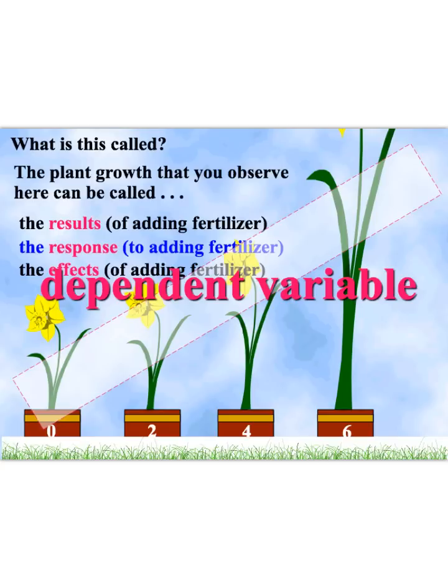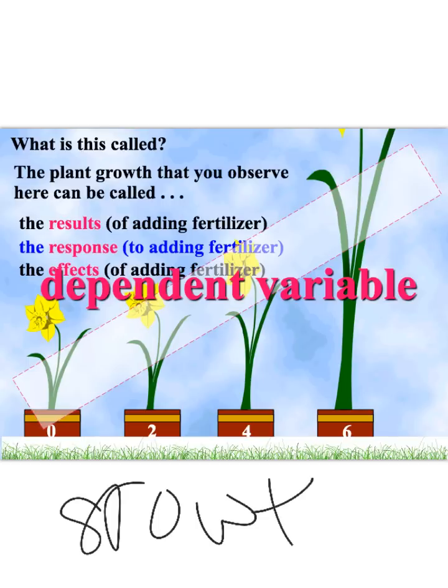Here are our dependent variables — our response: how tall did they get, the actual growth. When you're talking about your dependent variable, you always want to add units. Were they measuring this plant in centimeters or meters? We would say plant growth followed by our units.